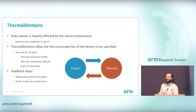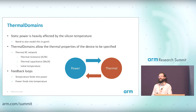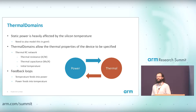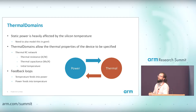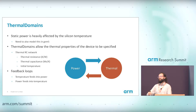There are also thermal domains. Static power is very heavily affected by temperature, so you need to model this in GEM5. The thermal domains use an RC network to model thermal characteristics: thermal resistance is essentially how much it heats up per watt you put in, and thermal capacitance is the amount of energy used when heating up by one degree. These allow you to model how the device heats up and cools down. There are feedback loops where temperature feeds into the power side and power feeds into the temperature, updated in tandem.